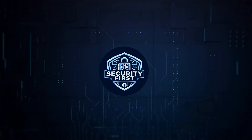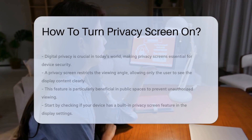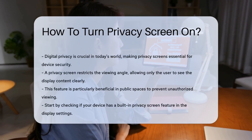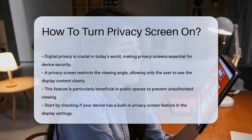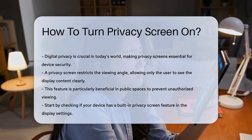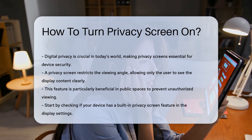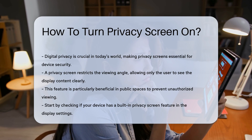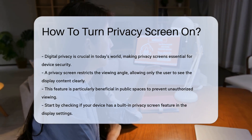Security First Corp: safety through knowledge. How to turn privacy screen on. In an age where digital privacy is paramount, many devices offer a privacy screen feature. This feature helps protect sensitive information from prying eyes. Understanding how to activate this setting can enhance your security. First, identify the device you are using — many smartphones and tablets have built-in privacy screen options.